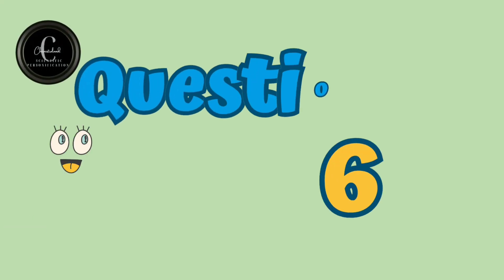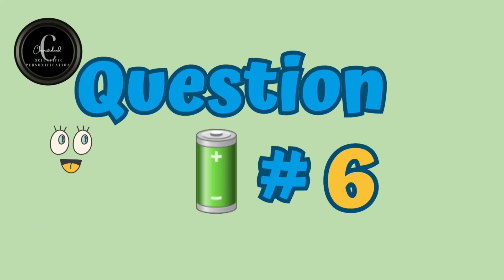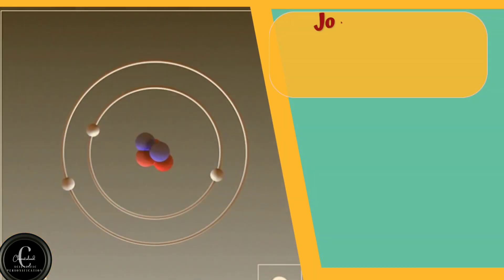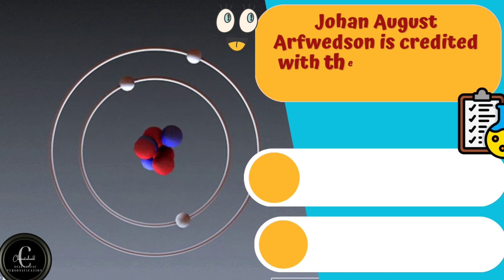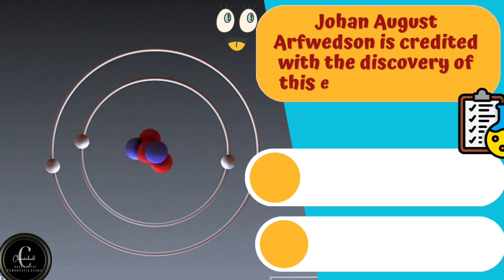Now it's turn of energetic question of the quiz. Required charged answer. Johann August Arfwetson is credited with the discovery of this element in 1817. Guess the element?